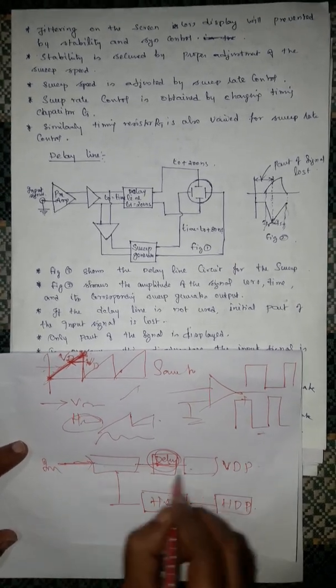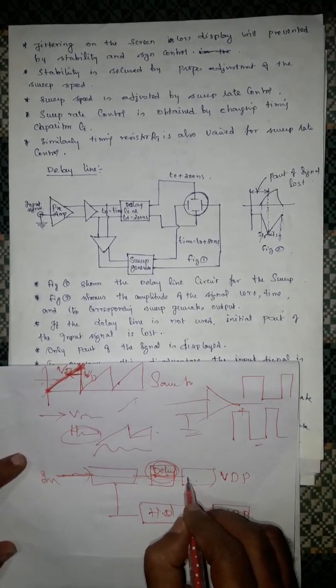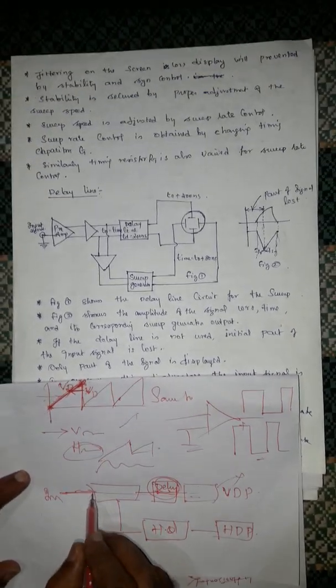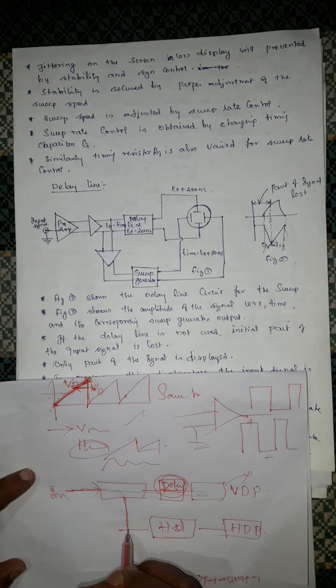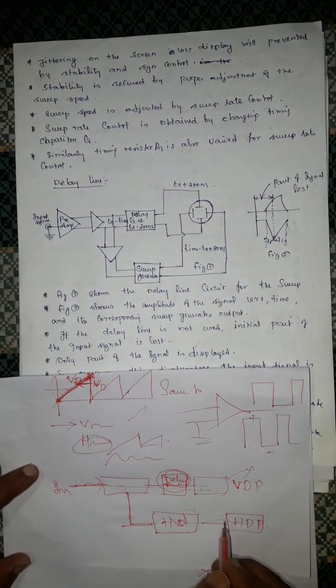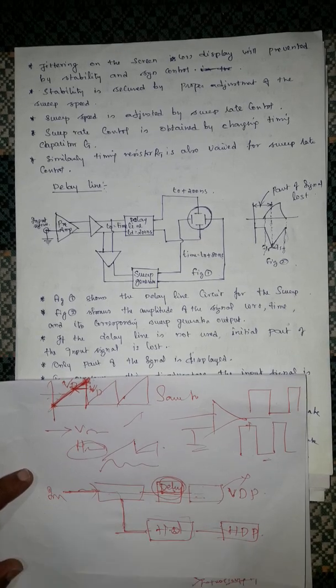If input signal is directly given, it will be started earlier. But the sweep has to pass through or sweep has to be generated through lot of circuit.